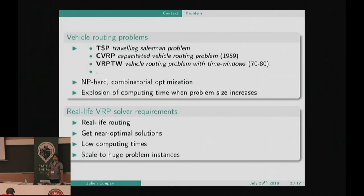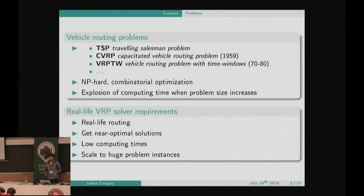Vehicle routing problems come in all sorts of flavors. The most simple, probably best known one, is the TSP — Travelling Salesman Problem — where you need to visit a list of places with only one route. Then, if you have other constraints like capacity restrictions or timing constraints, you have many different variants of the same problem. It's actually very simple to state: we need a cheap set of routes across a set of points that match the constraints. But it's known to be very hard to solve.